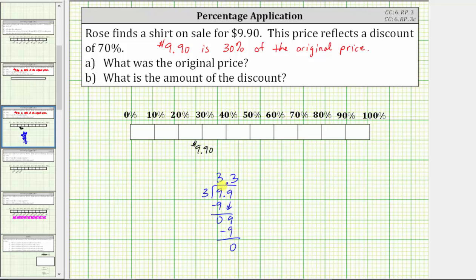The difference is zero. Because 9.9 divided by three is 3.3, we now know 10% of the original price is $3.30.